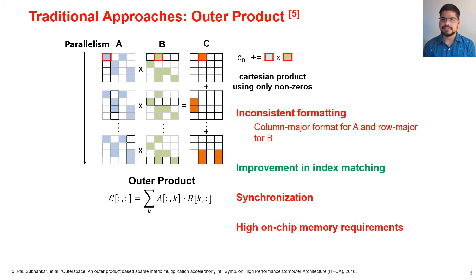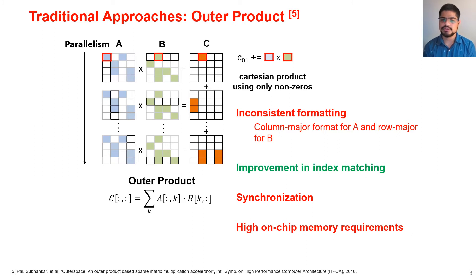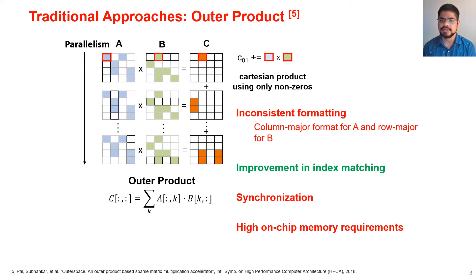The outer product approach also has inconsistent formatting because A needs to be stored in column-major order and B in row-major order. However, it avoids the inefficient index matching present in the inner product approach. It does require synchronization because different parallel steps produce the entire partial sum matrix, which can create read-after-write dependencies. It also has high on-chip memory requirements because every parallel step needs to store the entire partial sum matrix in on-chip buffers.